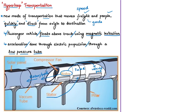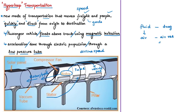Once the passenger vehicle is floating above the track using magnetic levitation, it glides at airline speeds for long distances. This is possible because of ultra-low aerodynamic drag. When an object moves in a fluid, the resistance force offered against its motion is called drag. When the fluid is air, it is called aerodynamic drag; when it is a liquid such as water, it is called hydrodynamic drag.